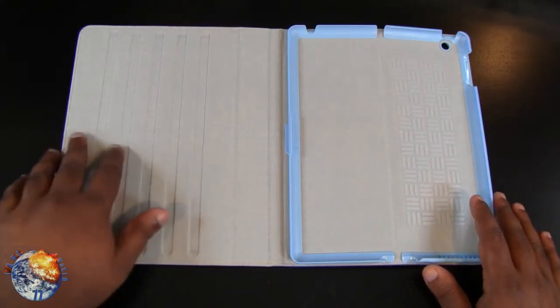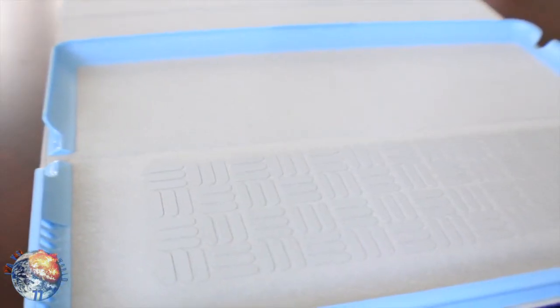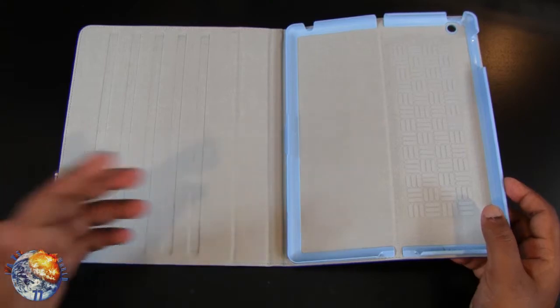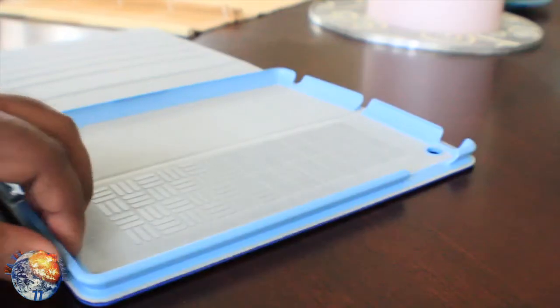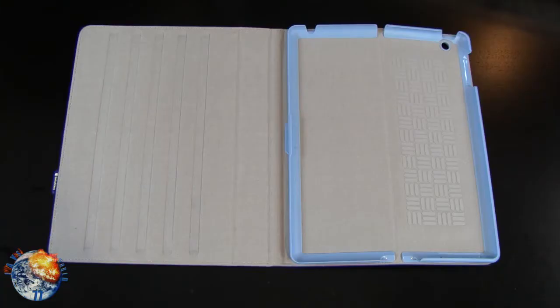The first thing that you notice is the grooves right here for multiple angles. You also have a nice pattern design on the side. The iPad is properly secured by this inner frame, which is made from strong, durable polycarbonate plastic. So let's go ahead and do the installation.